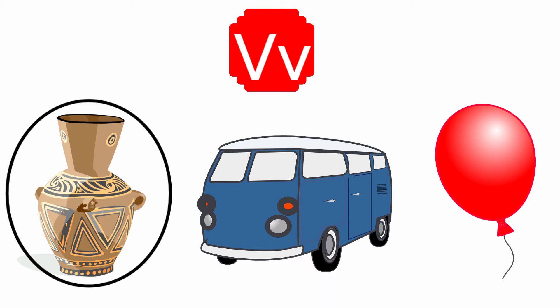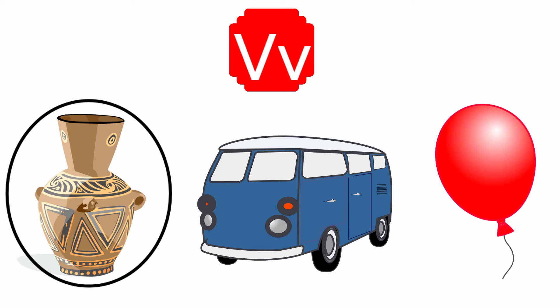Next one, Van. The beginning sound of the picture Van is V, and the sound of the letter V is V. The sound of the letter V and the beginning sound of the picture Van are the same. So, we are going to circle the picture Van.